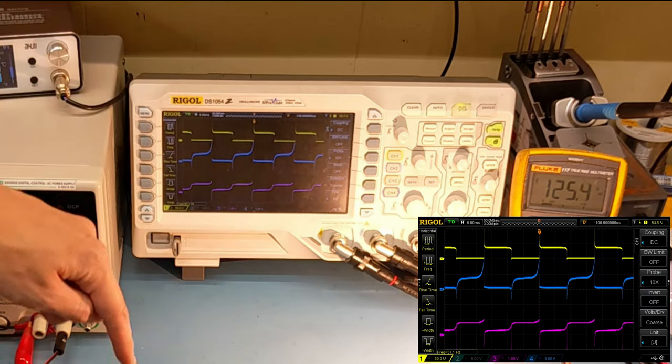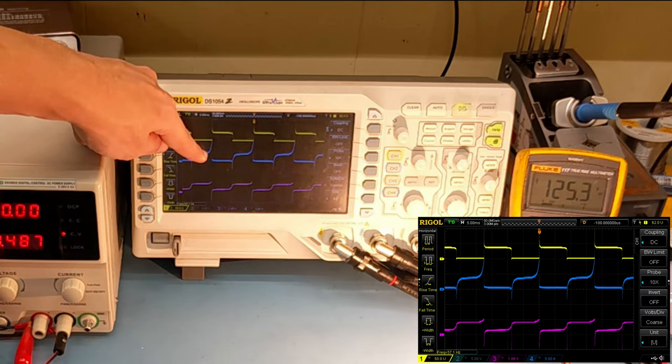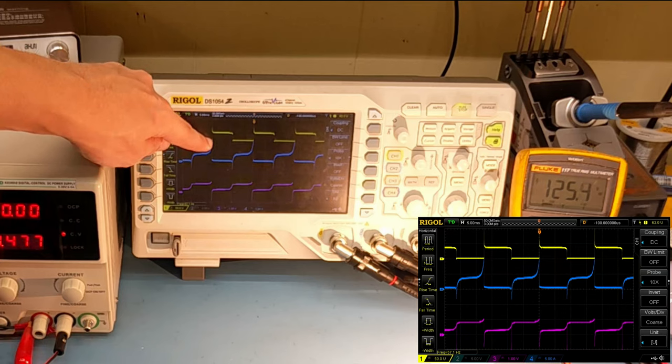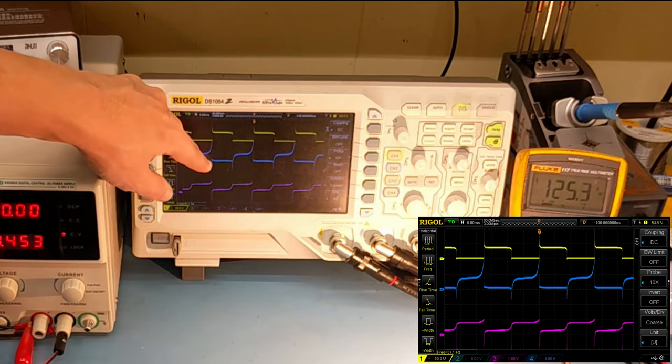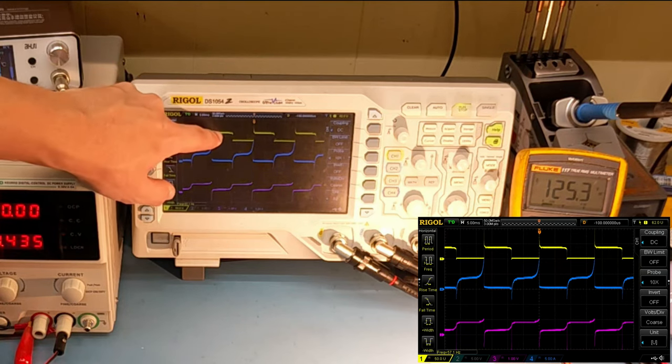It looks like our current through the transformer shoots up to some medium value and it stays at that medium value right up until the transformer core saturates at which point you can see it shoot way up. And then once it shoots way up you can see the circuit switches state and the other transistor starts to conduct.